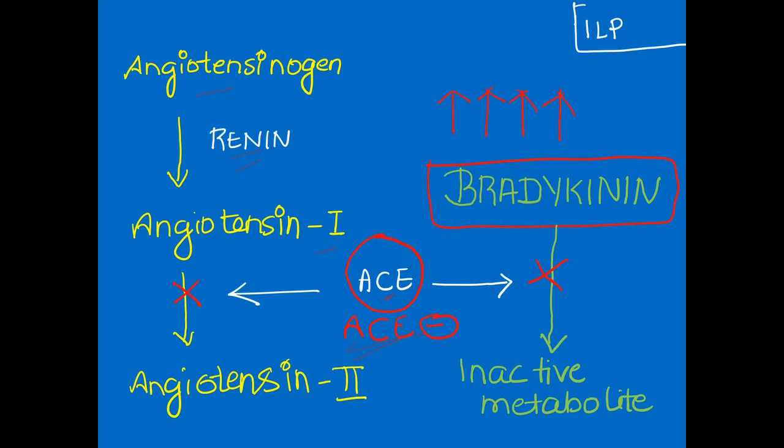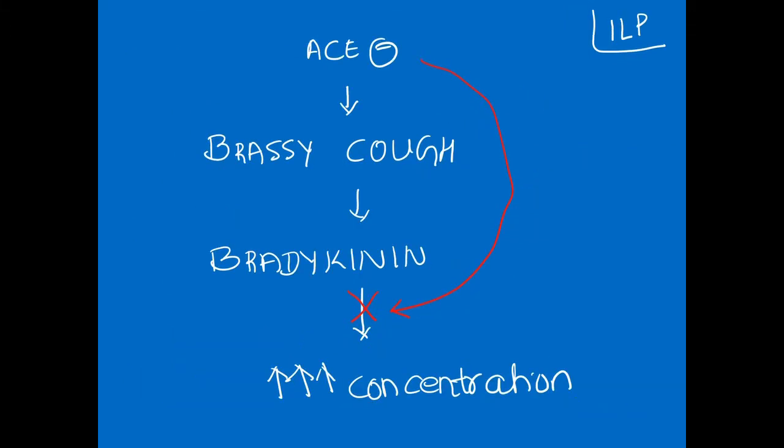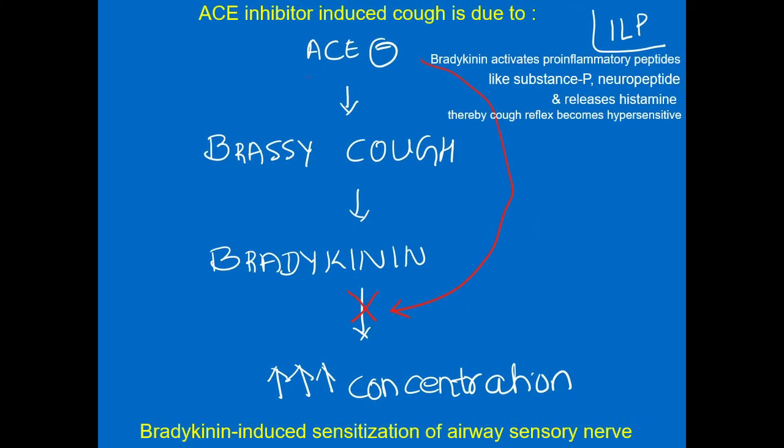In addition, substance P also gets accumulated and it can also contribute to causing dry cough. So basically, when you give ACE inhibitors, the dry cough is mainly due to the accumulation of bradykinin.